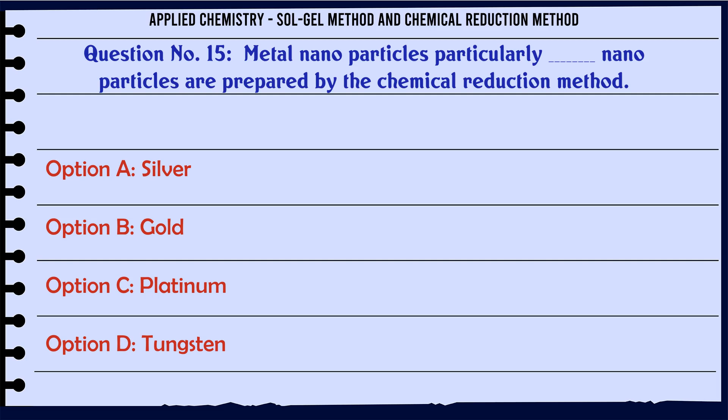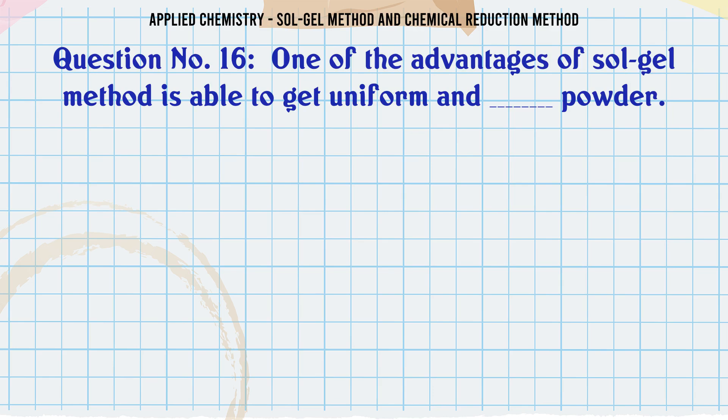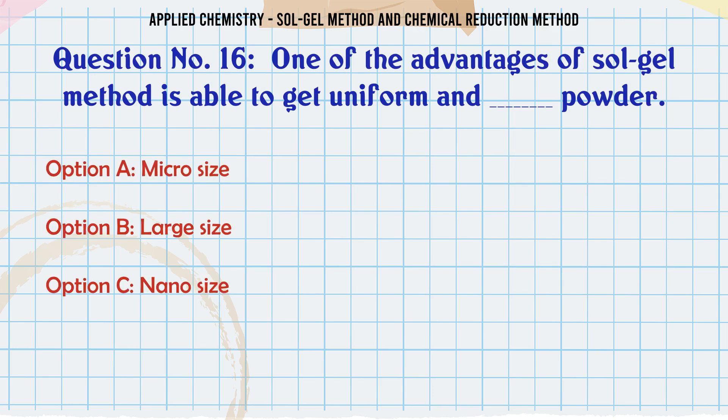Metal nanoparticles — particularly which nanoparticles — are prepared by the chemical reduction method? A. Silver, B. Gold, C. Platinum, D. Tungsten. The correct answer is Silver.